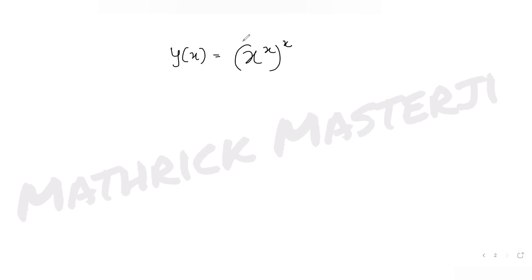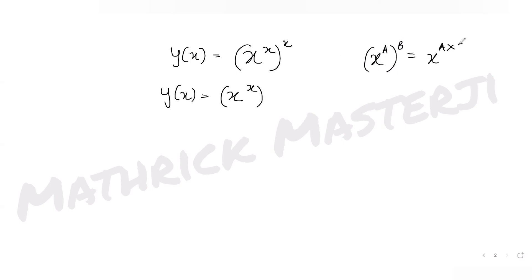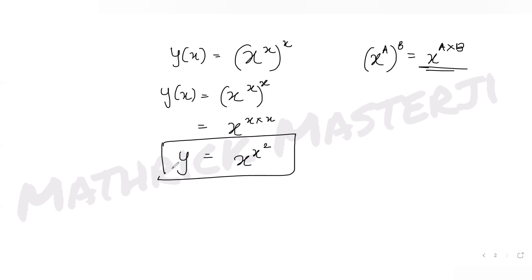First, let's simplify y(x) = x^(x^x). Using the exponent rule that (a^b)^c = a^(b·c), we can write x^x raised to x as x^(x·x), which gives us x^(x²). So y of x equals x raised to x square.